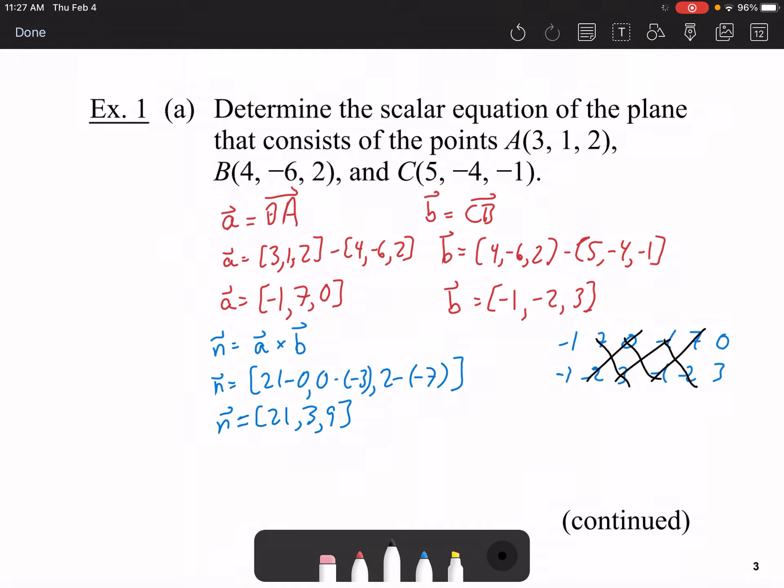Now, because normal vectors can be any scalar multiple size, you can even reduce this in size if you want. If you notice that they're all divisible by 3, you can. You can also reduce it later on if you wanted to. So, this turns out to be 7, 1, and 3.